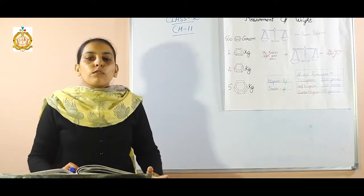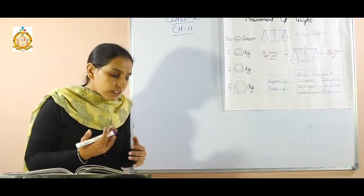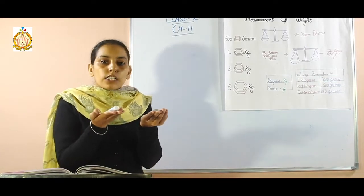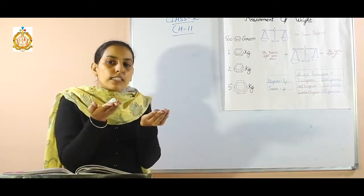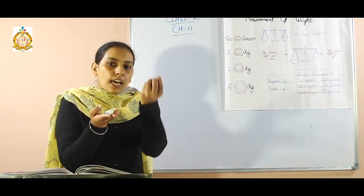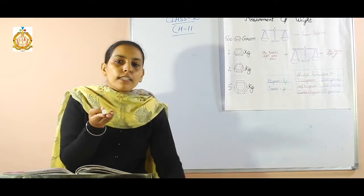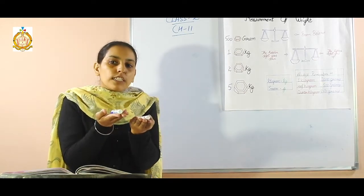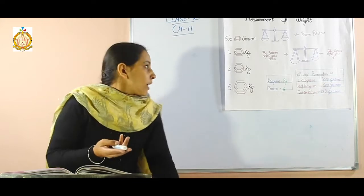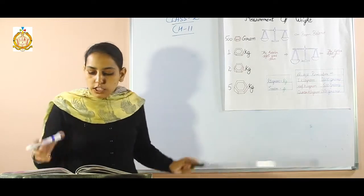In this chapter we are going to discuss how we can measure the weight of different things. For example, there are two things in my hand. First one is the stone and second one is the marker. You can easily say that stone is heavier than the marker. But if there are two markers in my hand, how can you say which one is heavier and which one is lighter? By using this beam balance we can measure the weight.